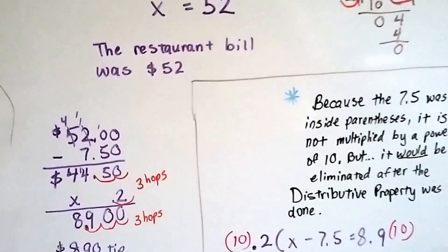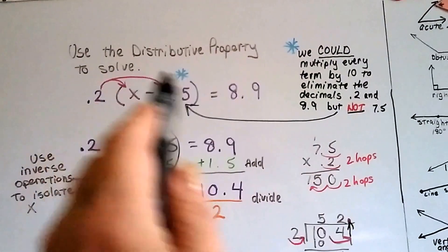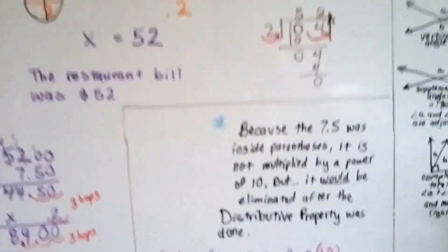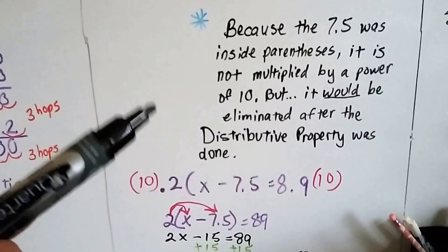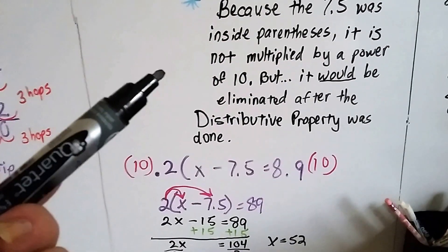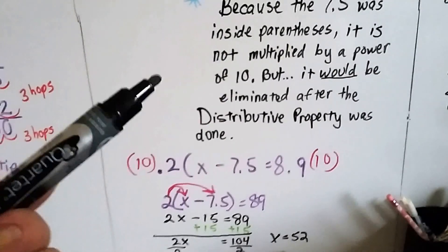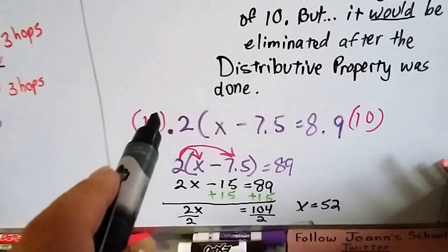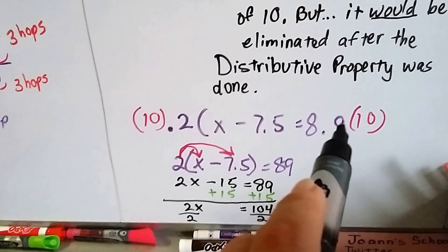Now let's talk about this, not multiplying it by a power of 10 because it's a decimal because we did that in the previous video. Why aren't we doing it now? Because that 7.5 was inside parentheses, it is not multiplied by a power of 10, but it would be eliminated after the distributive property was done.